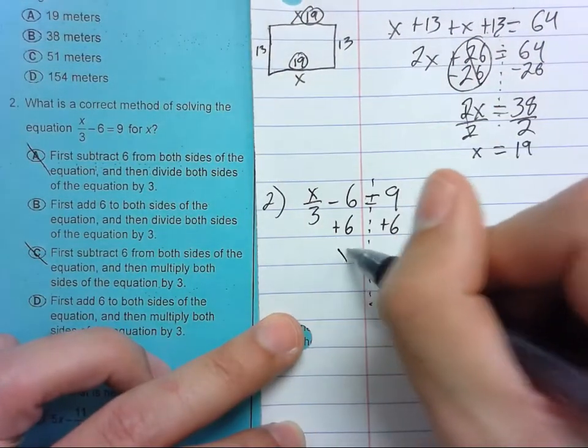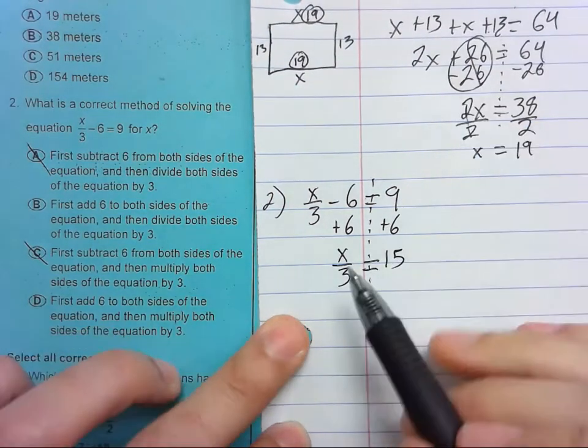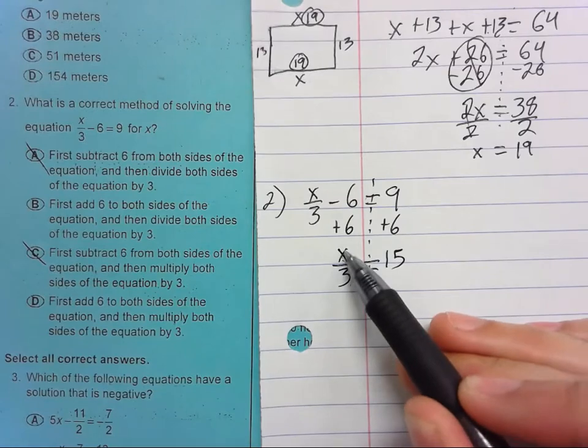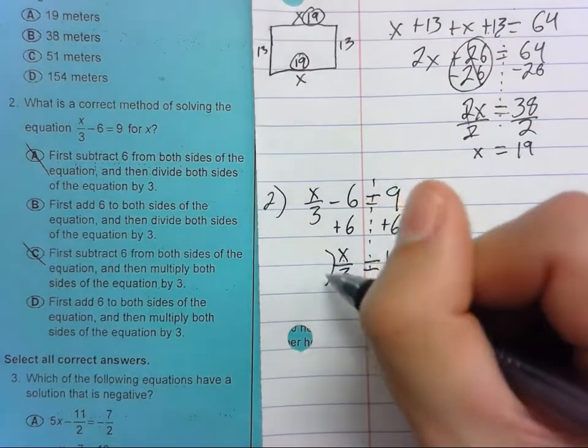When we do that, bring everything down. X over 3 equals 15. Now what operation is X over 3? This would be division. So this is X divided by 3. To undo that, we need to multiply by 3.